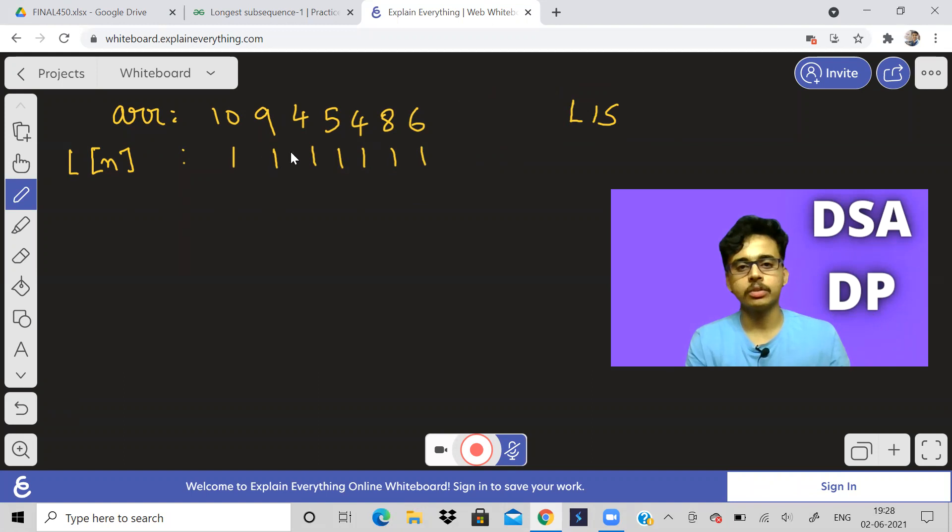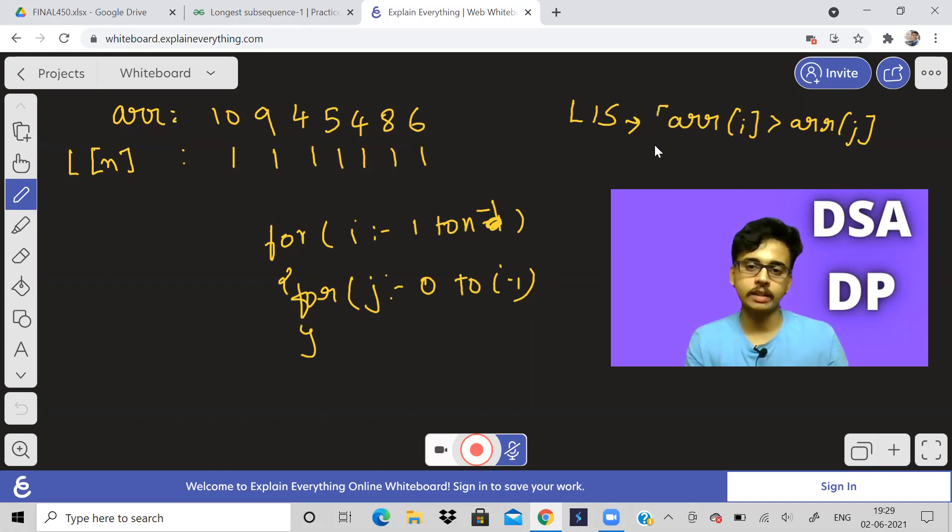Now what will we do? What do we have to compare now? See in the LIS problem, what were we saying? We were saying if array of I is greater than array of J. So we used to run a nested for loop. So initial for loop is I from one to N minus one. And J from zero to I minus one.